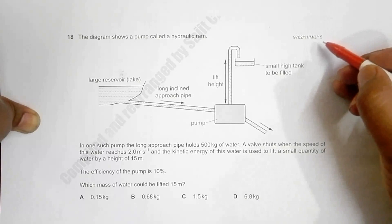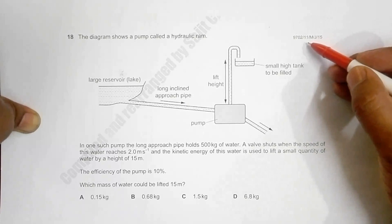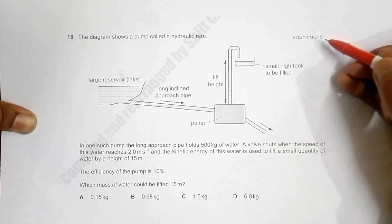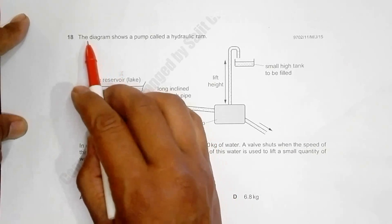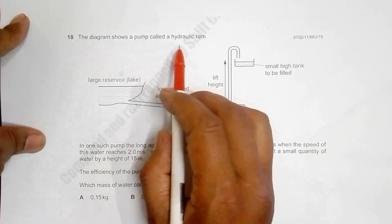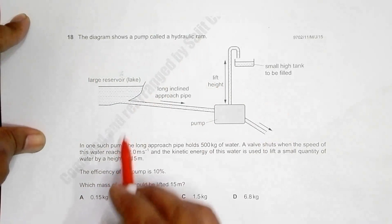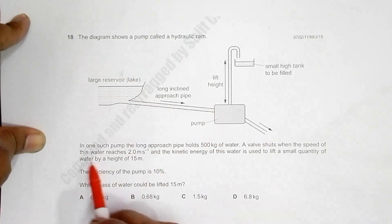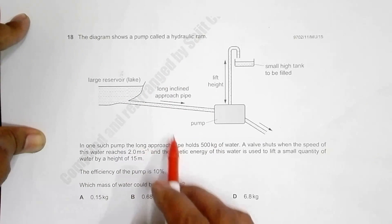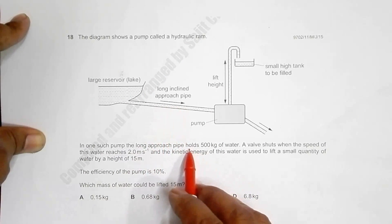Today the question is 2015 May June paper 11, question number 18. The diagram shows a pump called a hydraulic ram. It has a large reservoir here, so water from here goes like this. In one such pump, the long approach pipe holds 500 kg of water.